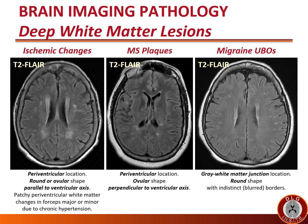The three different causes of subcortical white matter hyperintense lesions on T2 FLAIR are compared: On the left, ischemic changes tend to be paraventricular in location, round or ovular but parallel to the ventricular axis; this patient also has patchy white matter changes in the posterior corona radiata (forceps major) and anterior corona radiata (forceps minor), usually due to chronic hypertension. In the middle, most consistent with MS, the hyperintense lesions are also paraventricular but ovular with their axes perpendicular to the ventricular axis. On the right, the small hyperintense lesions are at the gray-white junction, not periventricular, tending to be round with indistinct borders — consistent with migraine UBOs.